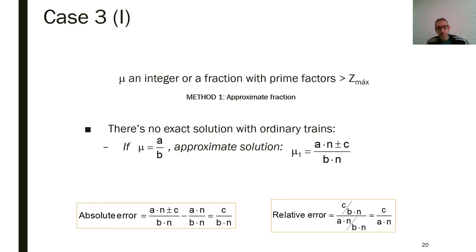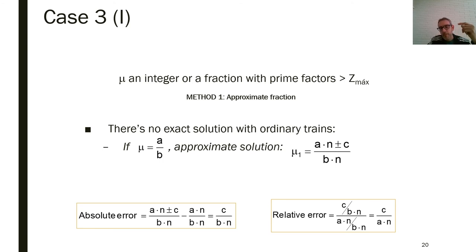We also have approximate solutions when we have a fraction of large prime numbers. We can use this approximation: approximate a velocity ratio A/B with A times N divided by B times N, plus or minus a small integer C. This finds a fraction numerically close to the original but with different factors, so some cancel out in the numerator and denominator, giving a better solution with valid teeth counts.